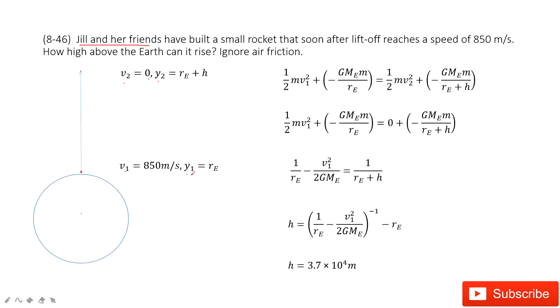We take the initial position as 1. As you can see in this problem, the energy is conserved. Initial energy equals final energy. So the initial kinetic energy plus the initial potential energy equals the final kinetic energy plus the final potential energy.